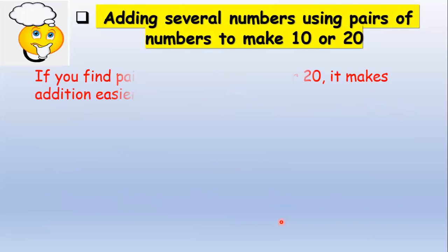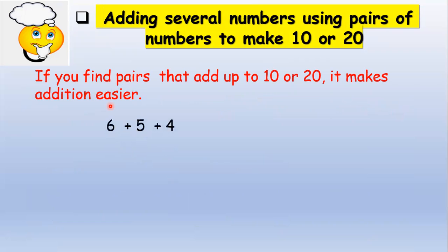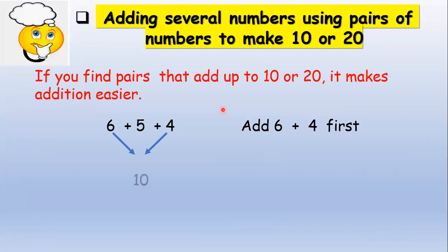If you find pairs that add up to 10 or 20, it makes addition easier. For example, we have 6 plus 5 plus 4. We have 6 and 4 here — we add them first: 6 plus 4 equals 10, then we add the 5 more. So 10 plus 5 equals 15.